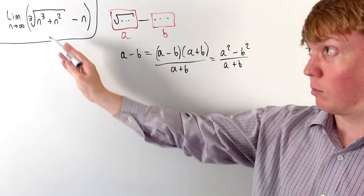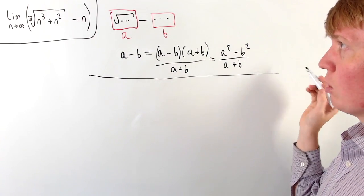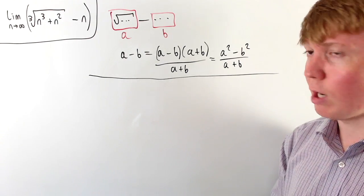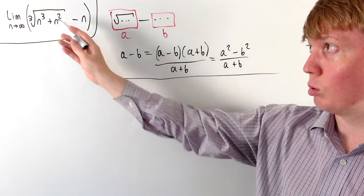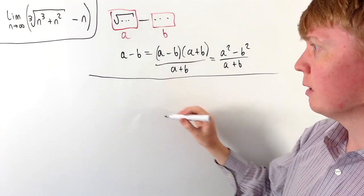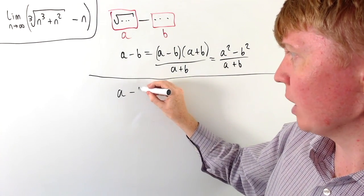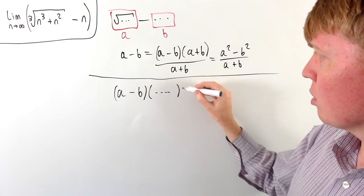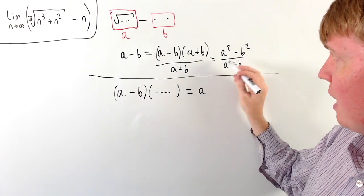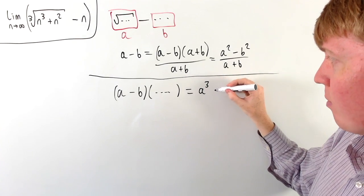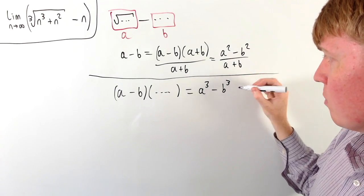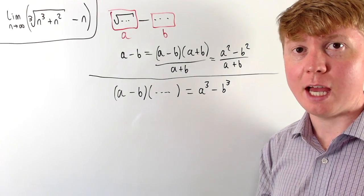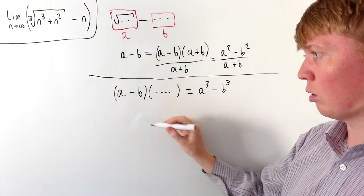We could try doing the exact same thing for our limit with the cube root, but unfortunately the difference of two squares identity would just square the term, but we really want to cube it. So let's imagine we've got a minus b, and now we want to multiply this by something so that instead of a squared minus b squared, we aim for a cubed minus b cubed. The question is: what do we need to multiply by to get a cubed minus b cubed?